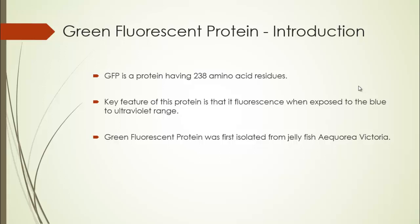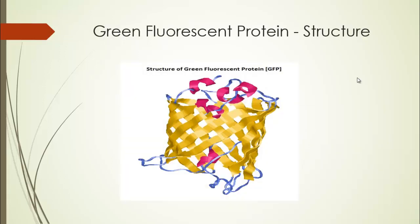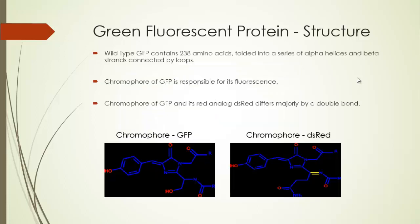The jellyfish species is Aequorea victoria. This is the structure of GFP — it is made of beta sheets and alpha helices connected via loops. The wild type GFP contains 238 amino acids folded into a series of alpha helices and beta strands connected by loops.